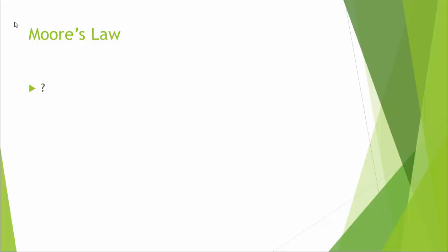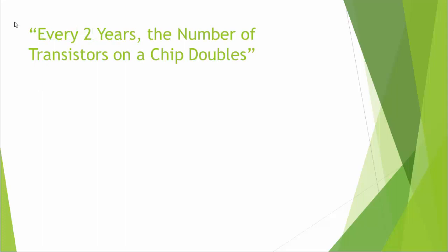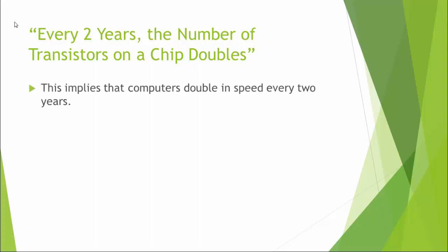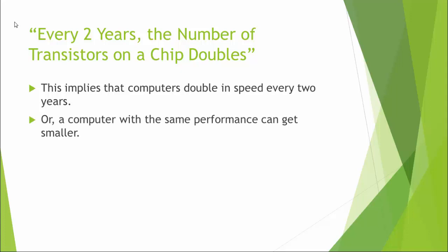His observation is called Moore's Law, but it was really just that — an observation. Maybe you know what it is? Here's essentially what it boils down to: every two years, the number of transistors on a computer chip doubles. This implies that a computer can double in speed every two years, or that a computer with the same performance gets to be half the size in two years, or half the cost. The implication of Moore's Law is that computers get more powerful, smaller, and cheaper.